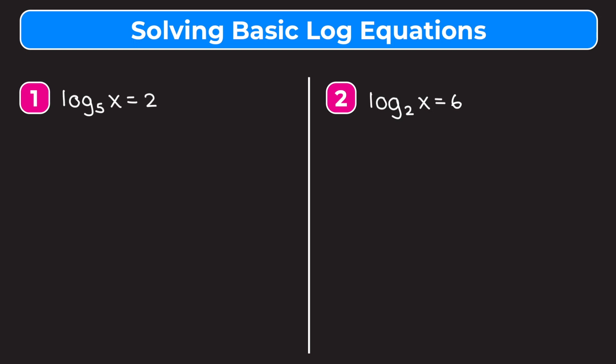If you guys already know how to do that, let's jump into example one: log base 5 of x is equal to 2. First, let's write down how to convert between log and exponential form. If we have log base b of x is equal to y, we write it in exponential form as b to the y is equal to x.